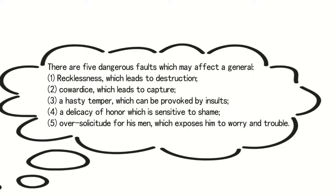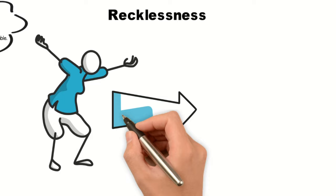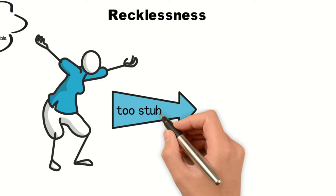First danger: recklessness, which leads to destruction. Sun Tzu warns us not to rely on reckless courage or act impulsively based on enthusiasm. Avoid being stubborn and risking your life for a certain cause. If you are extremely stubborn, to the point of insisting on doing something even if it means death, you will surely perish in warfare.